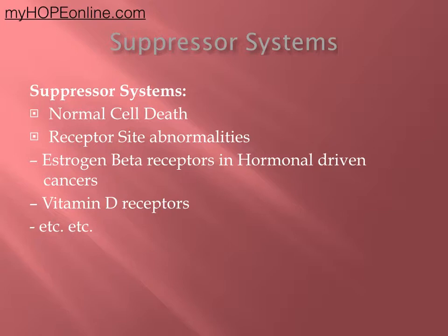Your apoptotic cycle has to do with just cleaning up older cells so that the mother cell, as it reproduces, is cleaned up and gotten rid of. It causes the cell to basically implode, and then your immune system helps carry that away and destroy any living pieces to it.